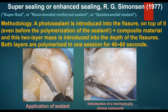Super sealing or enhanced sealing (Simonsen, 1977), also called resin-bonded reinforced sealing or quintessential sealing: a photo-curing sealant is introduced into the fissures, and on top of it, even before polymerization of the sealant, a composite material is added. This two-layer mass is introduced into the depth of the fissures, and both layers are polymerized in one session for 40 to 60 seconds.